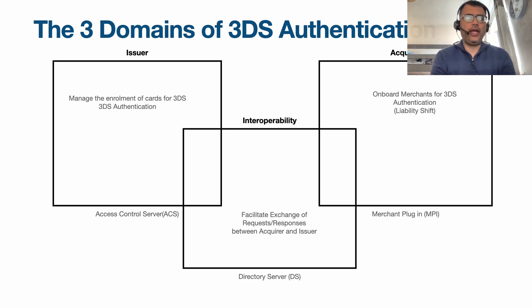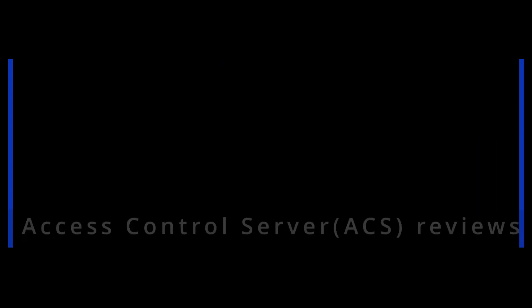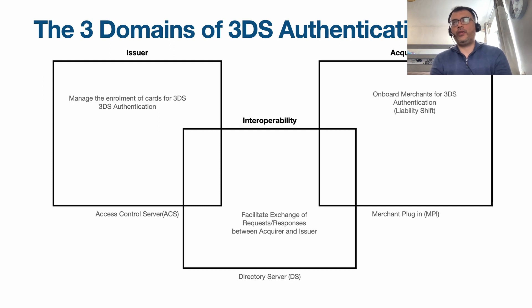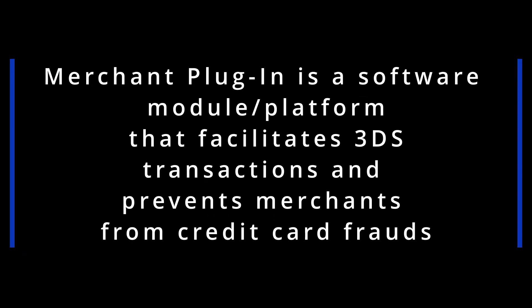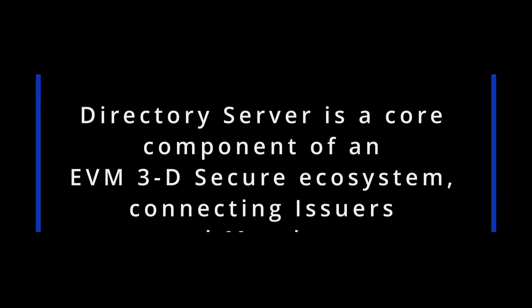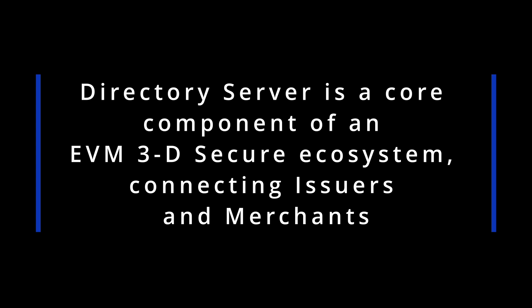There are three more subcategories we are going to discuss in detail. First is ACS — the Access Control Server — on the issuing side. We talked about ACS in the last video; today we look further into its role. Second is a new entity called MPI — Merchant Plugin — on the acquiring side. Third is the Directory Server, or DS, on the network or scheme side.